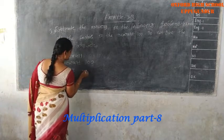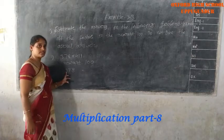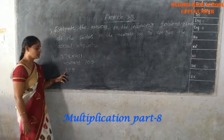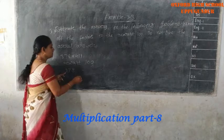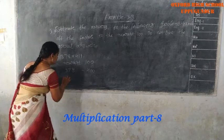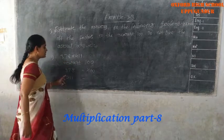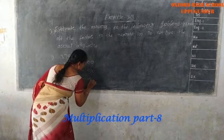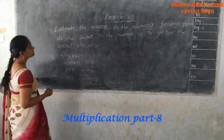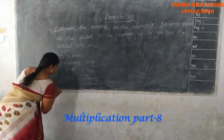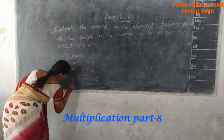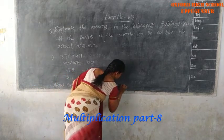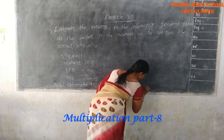378 — find the nearest hundreds. Observe the tens place value: is it 5 or above, or below 5? The tens digit is 7, which is 5 or above, so change the hundreds place value by adding one. The answer is 400.